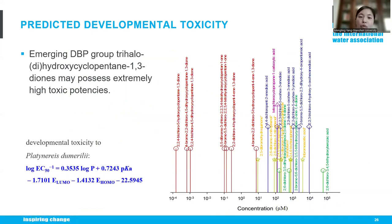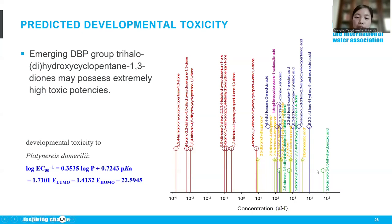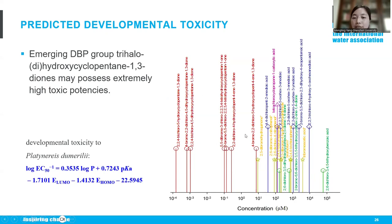Because most of these compounds are newly identified DBPs, standard compounds are not commercially available. Therefore, if we want to know their toxicity potencies, we use our previously developed QSAR models to predict their toxicity. The lollipop data shows their toxicity — if the EC50 value is high, the toxicity potency is lower. Compared with commonly known DBPs like tribromoacetic acid, most of the newly identified aromatic DBPs, such as 2,5-dihydroquinone, are much more toxic.